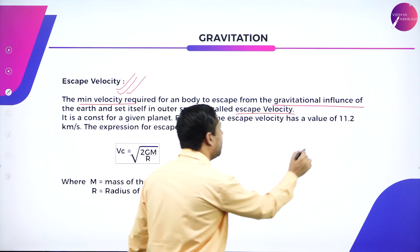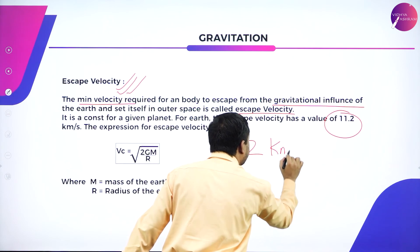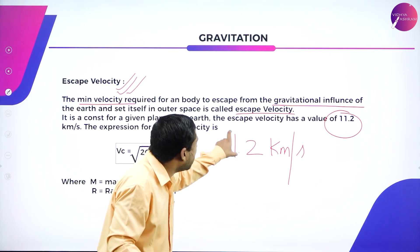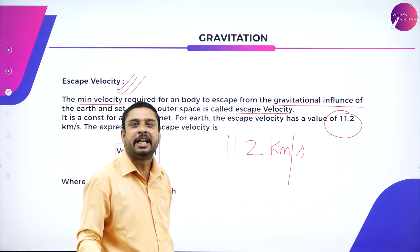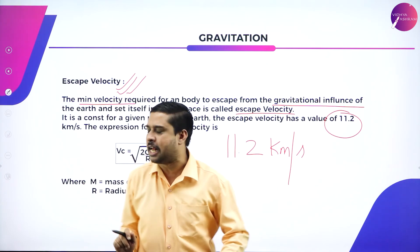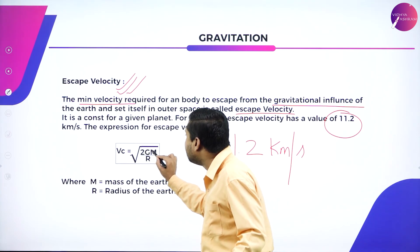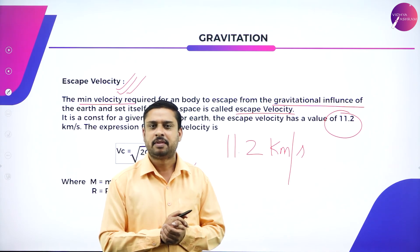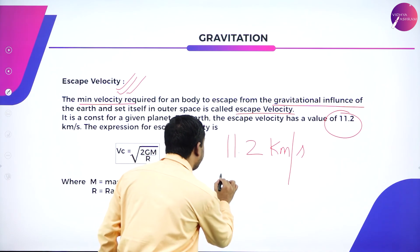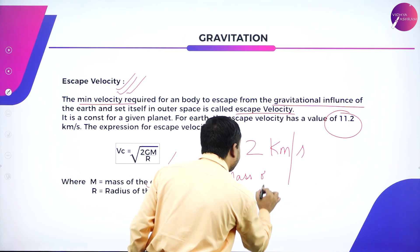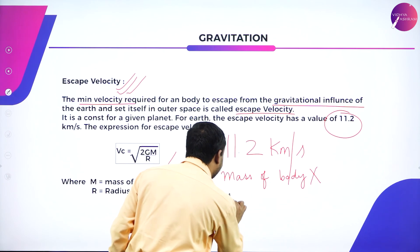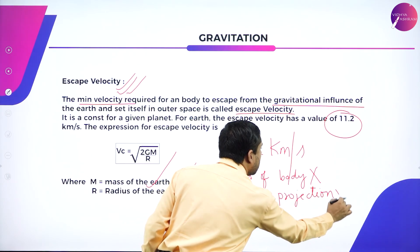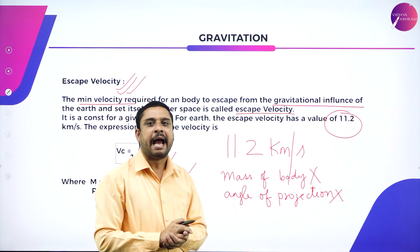Escape velocity is constant for a given planet. For earth, the value of escape velocity is 11.2 km/s. The expression for escape velocity is √(2GM/R), where M is the mass of the earth and R is the radius of the earth. Please note that escape velocity is independent of the mass of the body and it is independent of the angle of projection.